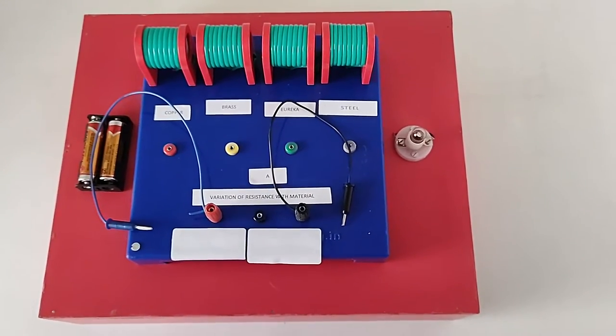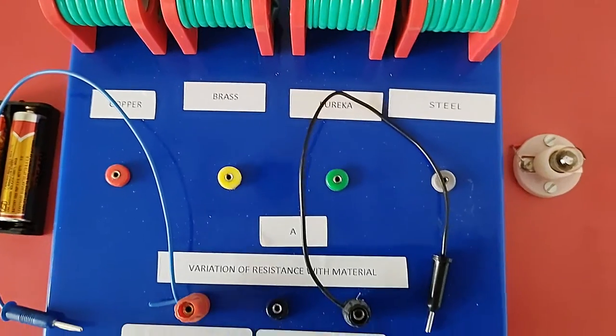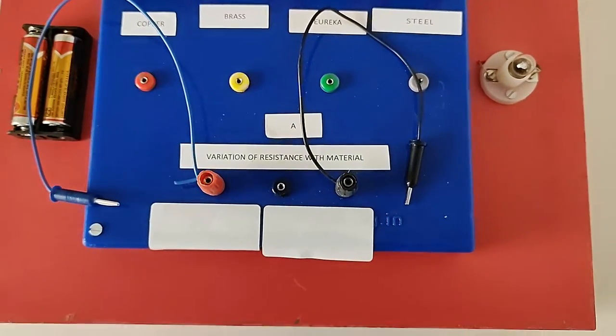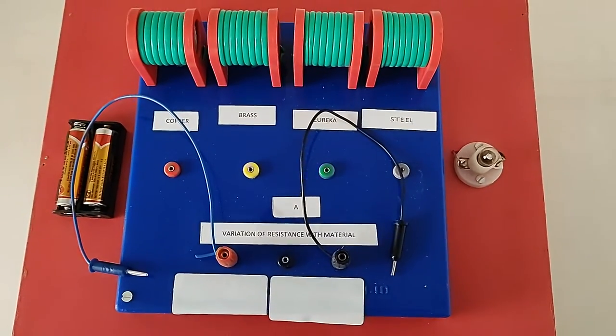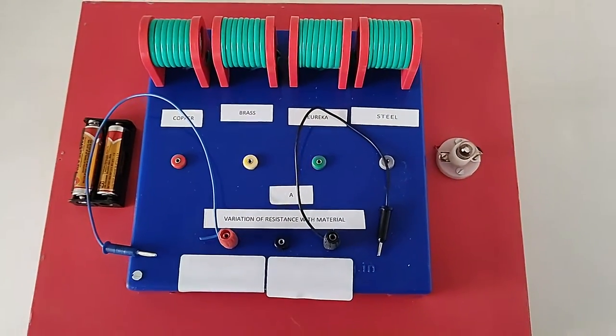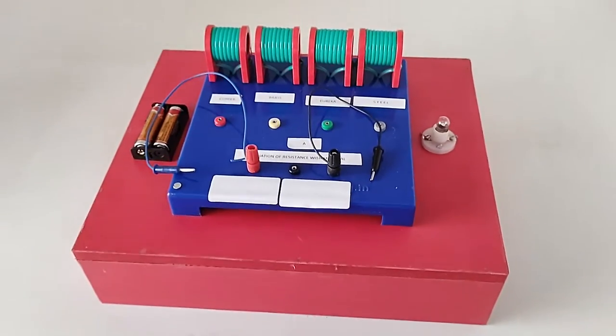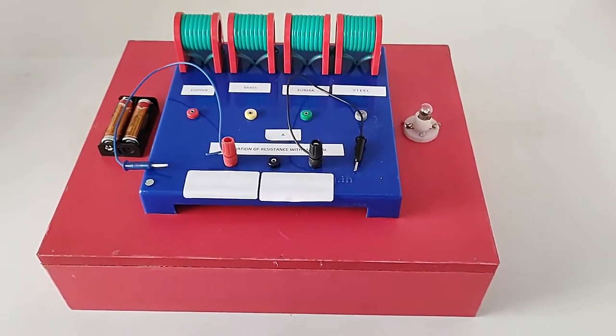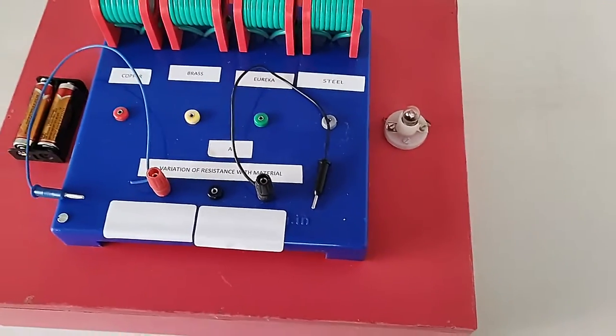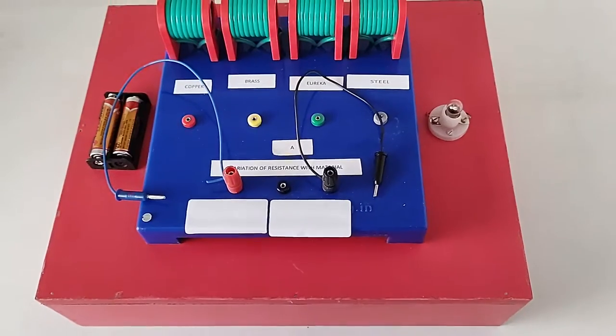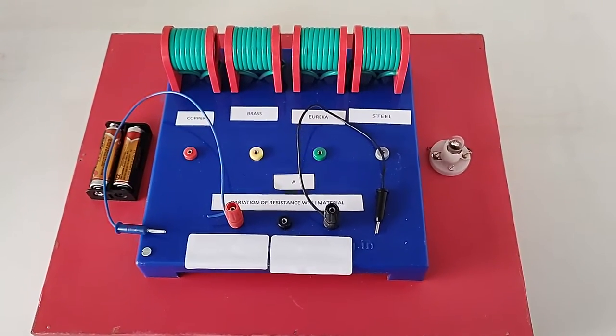This is the model which demonstrates variation of resistance with respect to the material. We are going to change the material and see which material has how much resistance. Resistance opposes the flow of electrons. Each and every material, whether it is a conductor or good conductor, definitely opposes electrons to a certain extent. So a little bit of resistance is always there in every material.